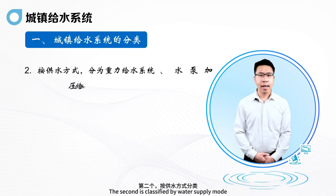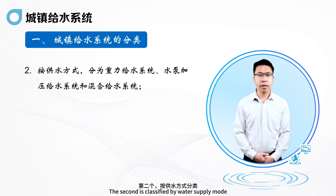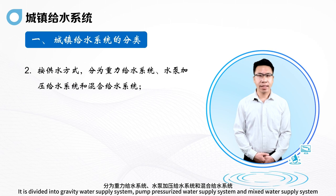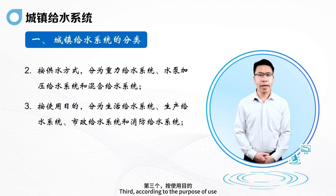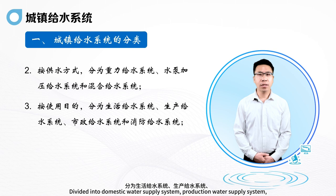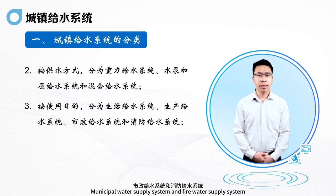The second classification is by water supply mode, divided into gravity water supply system, pump pressurized water supply system, and mixed water supply system. Third, according to the purpose of use, it is divided into domestic water supply system, production water supply system, municipal water supply system and fire water supply system.